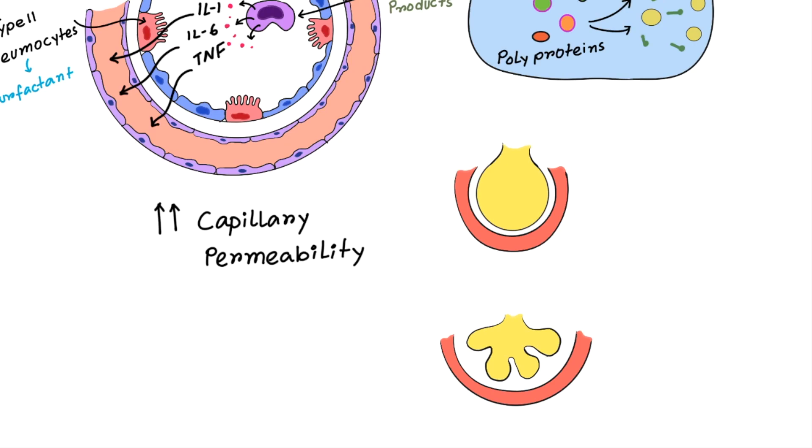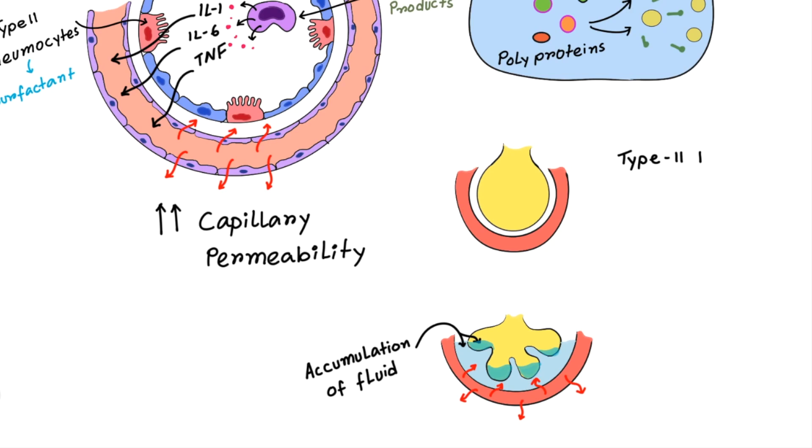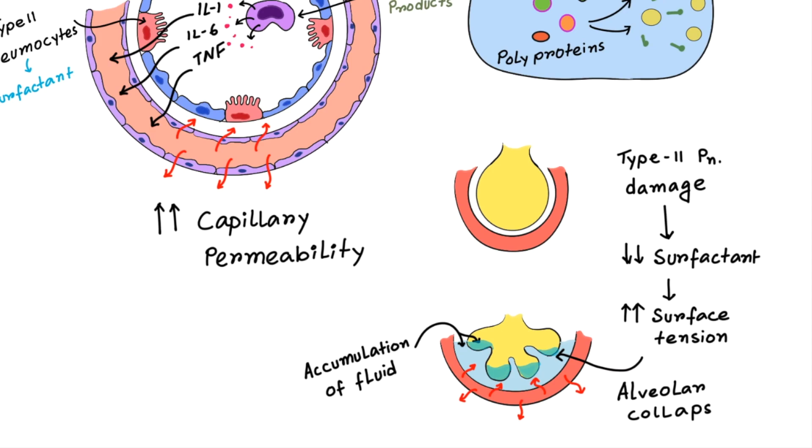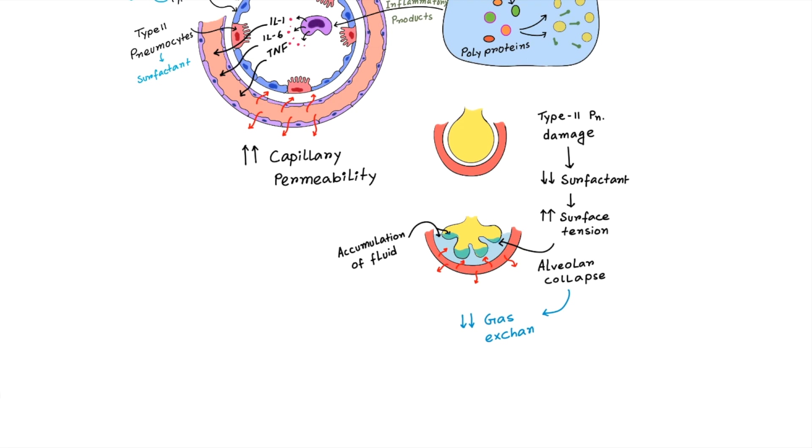So, what would be the consequences? The plasma will spill out into the interstitial spaces. Fluid will accumulate around the alveoli and compress the alveoli. Some fluid will come into the alveoli and start accumulating there. This will wash out the surfactant and moreover, due to damage of the type 2 pneumocytes, there will be low production of surfactant. So, it will lead to increased surface tension and eventually alveolar collapse. Interstitial fluid accumulation and alveolar collapse can decrease the gas exchange, which will cause hypoxemia. That means, decreased oxygen concentration in blood. It will also cause increased work of breathing. Why increased work of breathing? This is because your alveoli are collapsing, so you have to work extra hard to keep them inflated and keep them open against the interstitial edema.